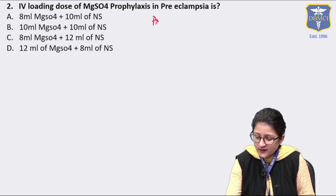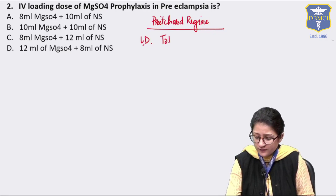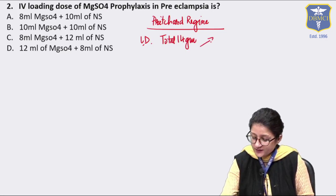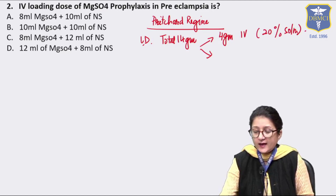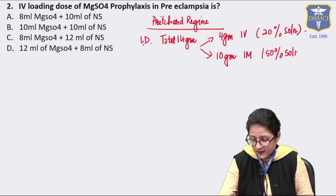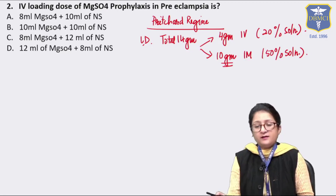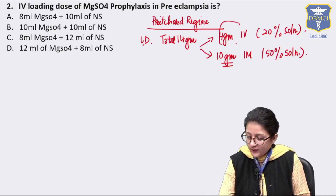In the Pritchard regime loading dose, we give a total of 14 grams. Of this, 4 grams is given IV as a 20% solution, and the remaining 10 grams is given IM as a 50% solution — 5 grams in one buttock and 5 grams in the other. So 4 grams is the IV dose.